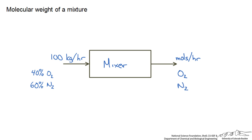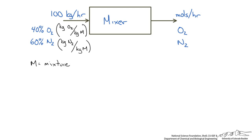It is important to label our units if we have not done so. So I am going to fill that in on the left side here. I have written kilograms of oxygen per kilogram of mixture. So if we wanted to get into a molar composition, we should be familiar with just converting a mass to a mole. What we could do here is multiply 0.4 times the 100 kilograms per hour entering to get our total mass of oxygen coming in per hour.